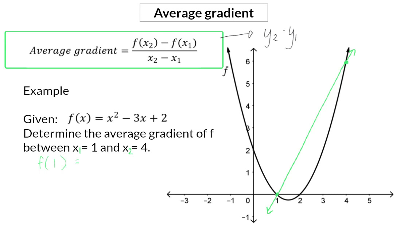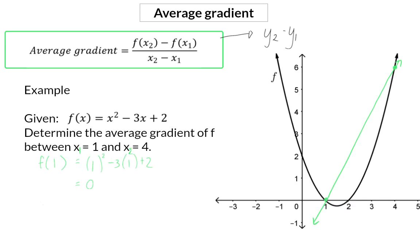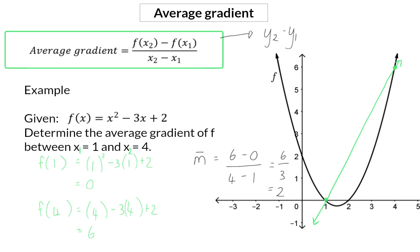I'm going to number the two x values and determine the y value when x equals 1 by substituting 1 everywhere in the equation. This gives a y value of 0. Next I calculate the y value when x equals 4 by substituting 4 everywhere in the equation, and this gives a y value of 6. The average gradient, denoted m with a line on top, is y2 minus y1 divided by x2 minus x1, which gives 6 divided by 3, so the average gradient is 2.